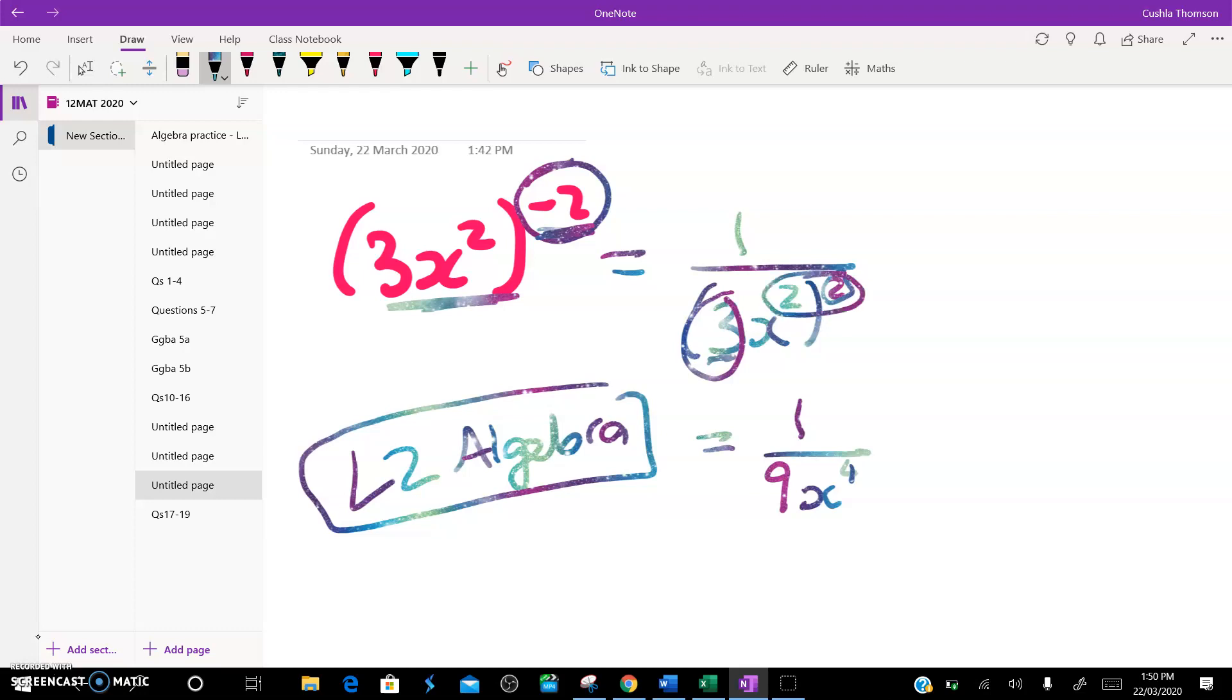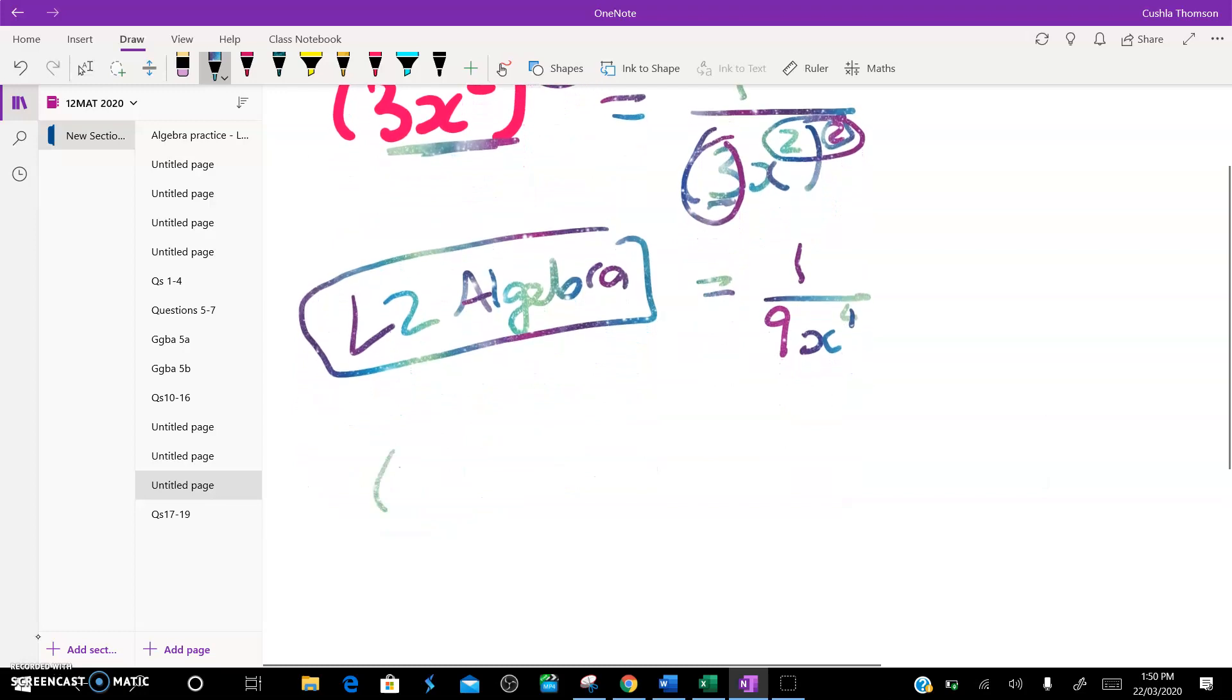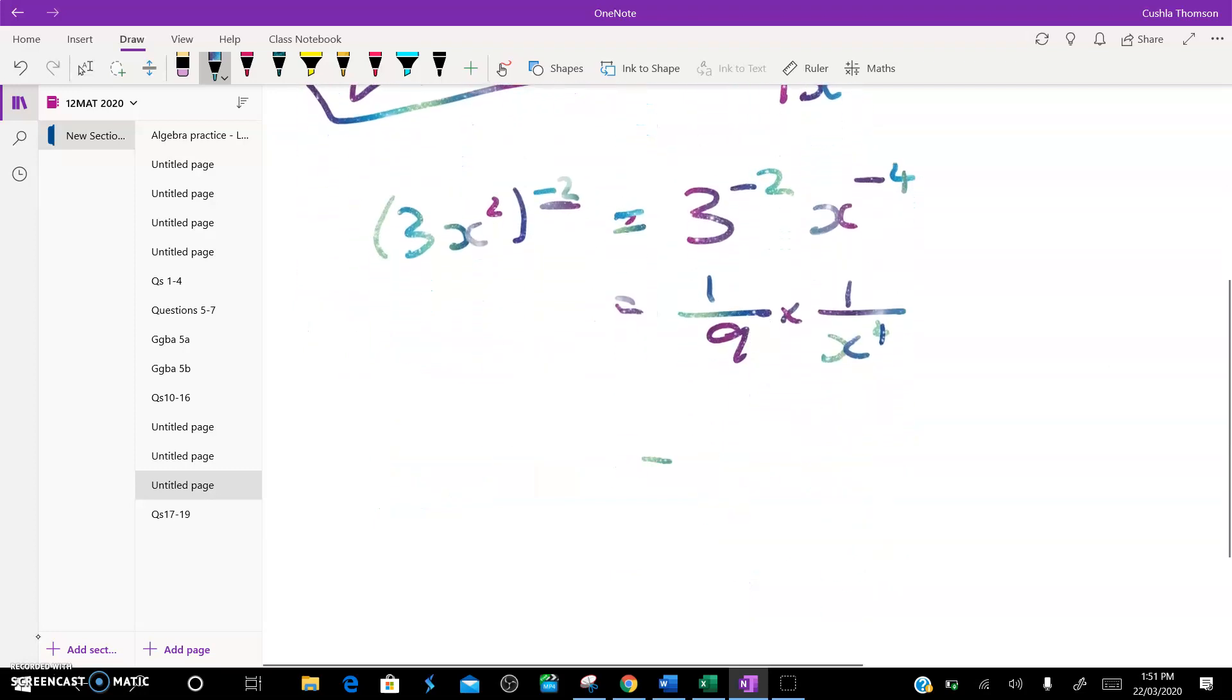The other way to do that is this. I've got 3x squared to the negative 2. So I can just apply this power to each bit in turn. That gives me 3 to the negative 2 times x to the negative 4, which is 1 ninth times 1 over x to the power of 4, which I'm going to write like this. So either of those ways is good.